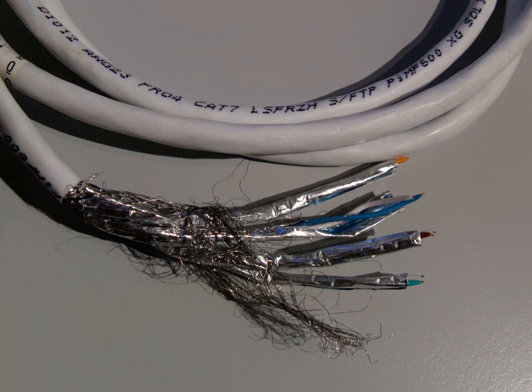Class F link channel up to 600 MHz using Category 7 cable connectors. Class F-A link channel up to 1000 MHz using Category 7A cable connectors, Amendment 1 and 2 to ISO/IEC 11801 2nd edition.